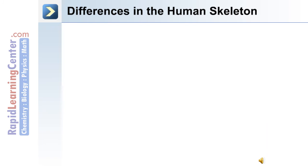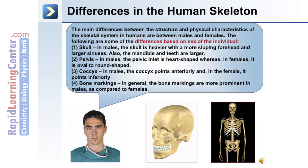There are differences in skeletal structure between humans. The main differences in the skeletal system are between males and females. In the skull, males have a heavier skull with a more sloping forehead, larger sinuses, and larger mandible and teeth. In the pelvis, males have a heart-shaped pelvic inlet, whereas in females it is oval to round-shaped. There are also differences in the coccyx: in males it points anteriorly, and in females it points inferiorly. In general, bone markings are more prominent in males compared to females.